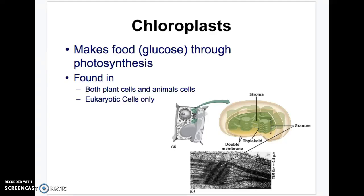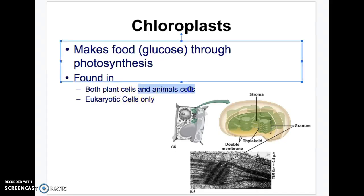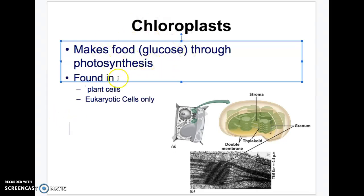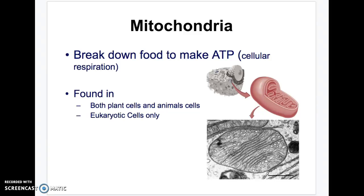Chloroplasts make food through photosynthesis. This is only in plant cells — we'll say plant cells have chloroplasts, not animal cells. Chloroplasts do photosynthesis to make food, and then mitochondria takes that food and makes energy.